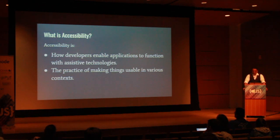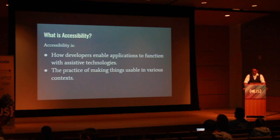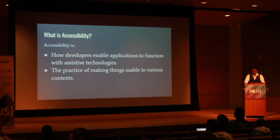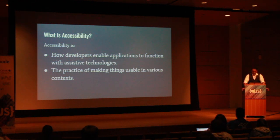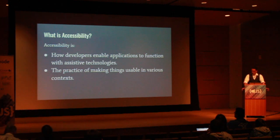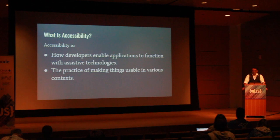Accessibility is how developers enable applications to function with assistive technologies, or the practice of making things usable in various contexts. A disability exists in the context of the environment. Dyslexia isn't a disability for someone who doesn't need to read. People who can't hear typically see images just fine, and people who can't see typically hear our audio. We say something is accessible when we've confirmed that the features and functions in our applications are available to everyone in context.